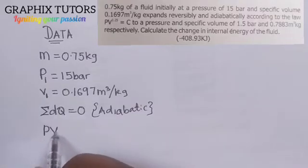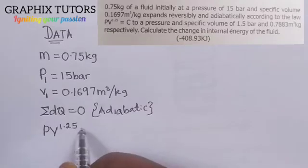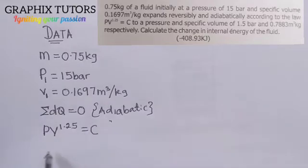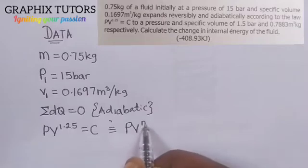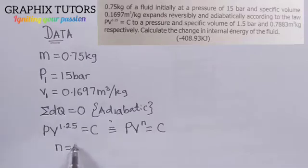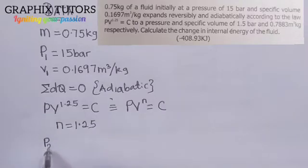The law we are following is PV to the power 1.25 equals C. This is a polytropic equation, similar to PV to the power n equals C. Comparing both, it means n is equal to 1.25, where n is called the polytropic index.